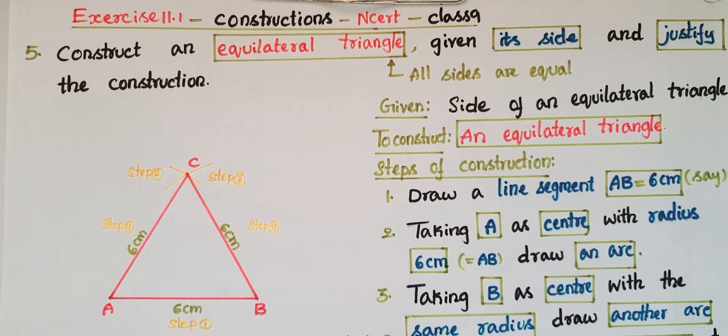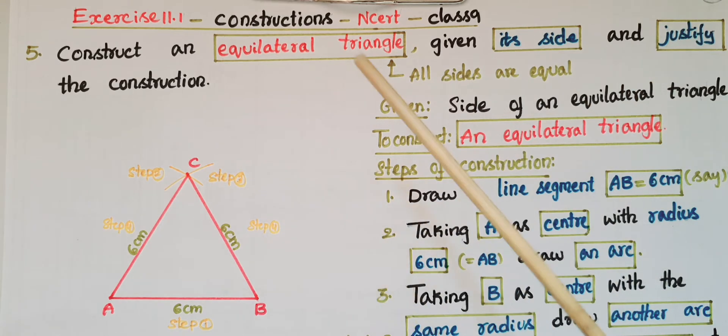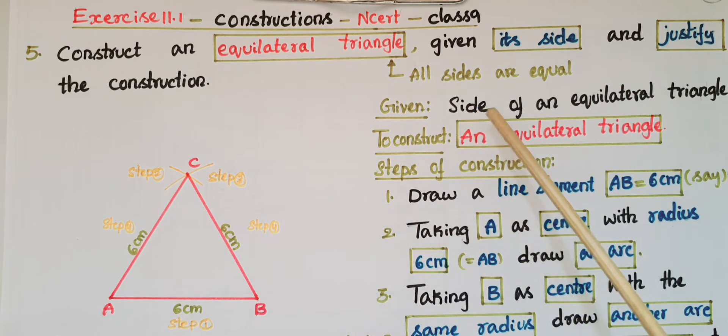Hello everyone, today I am going to tell the solution of the fifth problem from Exercise 11.1 from the Construction chapter from NCERT Class 9. Construct an equilateral triangle given its side and justify the construction.